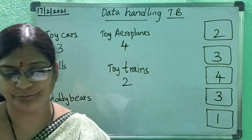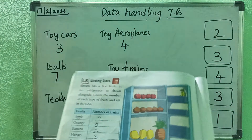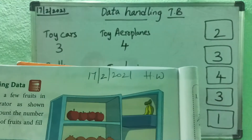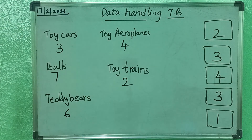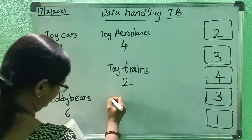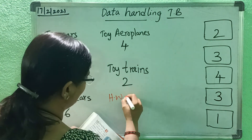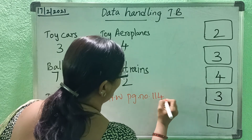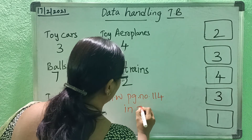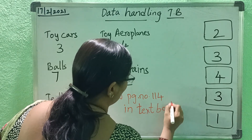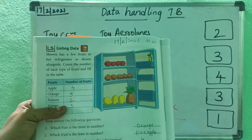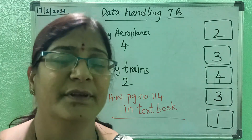Next page, children — page number 114. This is homework, children. Write the date and write homework. I will write on the board: homework, page number 114. This is in the textbook, children. Here also you have to see and write. Thank you.